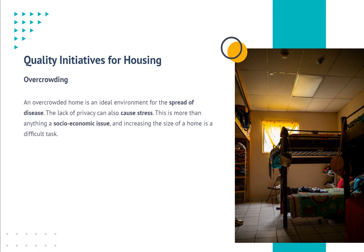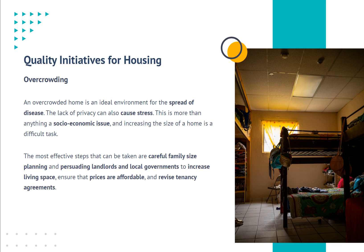Overcrowding. An overcrowded home is an ideal environment for the spread of disease. The lack of privacy can also cause stress. This is more than anything a socio-economic issue, and increasing the size of a home is a difficult task. The most effective steps that can be taken are careful family size planning and persuading landlords and local governments to increase living space, ensure that prices are affordable, and revise tenancy agreements.